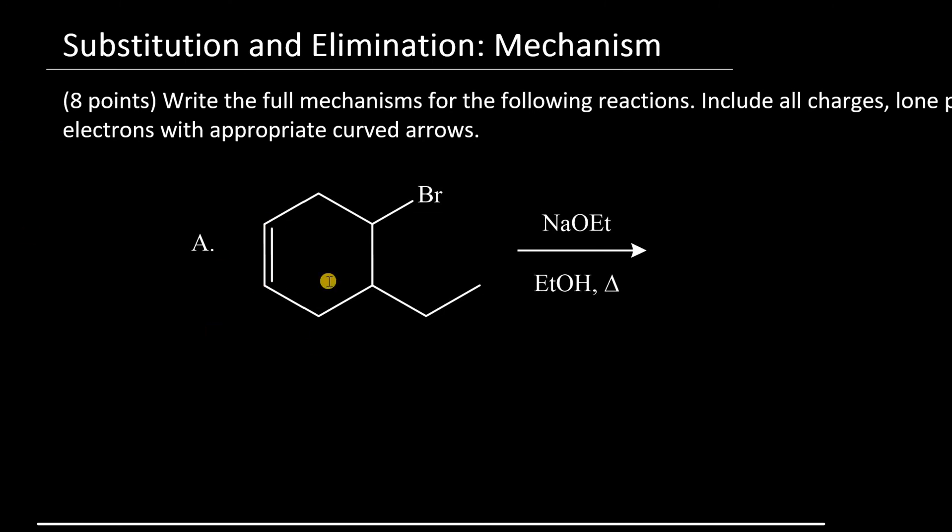In question A, I have a cyclohexane derivative with a bromine leaving group and an ethyl group. The first thing I notice is that this alkyl halide is secondary. With this piece of information alone, we can't narrow down whether this reaction undergoes elimination or substitution. But if you look at the reagents, we have sodium ethoxide with ethanol as the solvent, and the reaction system is heated. When heat is included in a reaction, elimination is always favored over substitution.